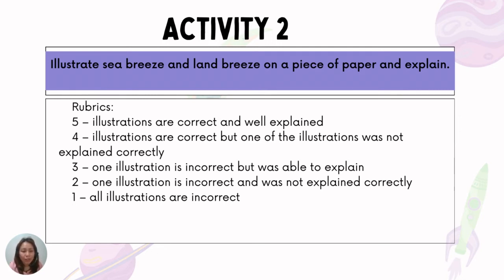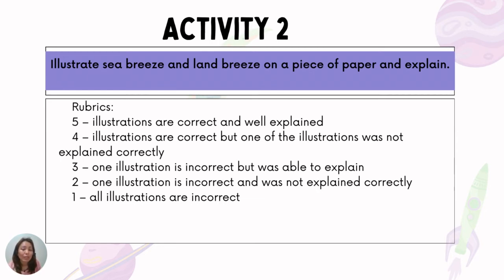These are the rubrics: five points if you got the illustrations correctly and well explained; four points if the illustrations are correct but one was not explained correctly; three points if one illustration is incorrect but you were able to explain; two points if one illustration is incorrect and was not explained correctly; and one point even if all illustrations are incorrect, just for your effort.